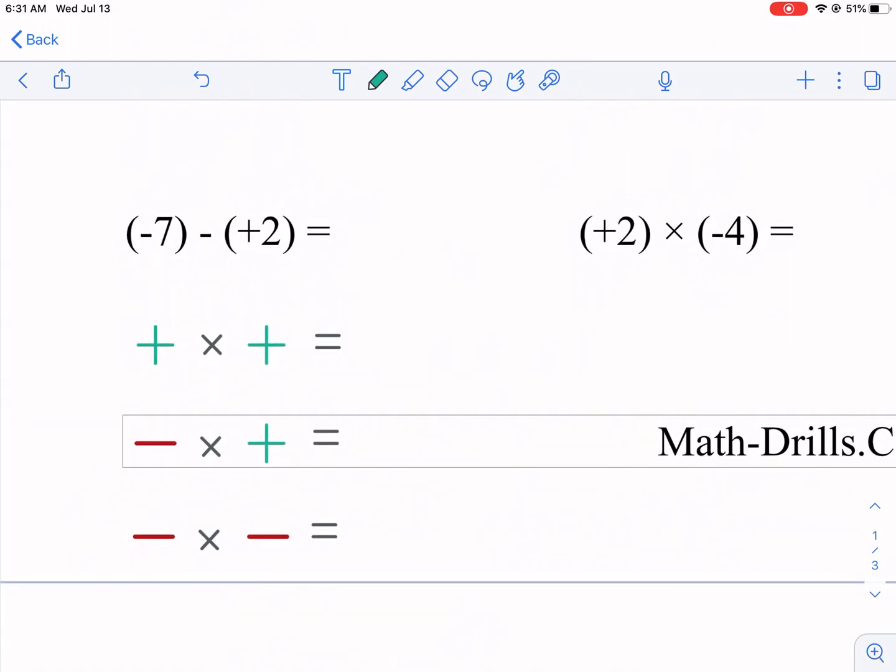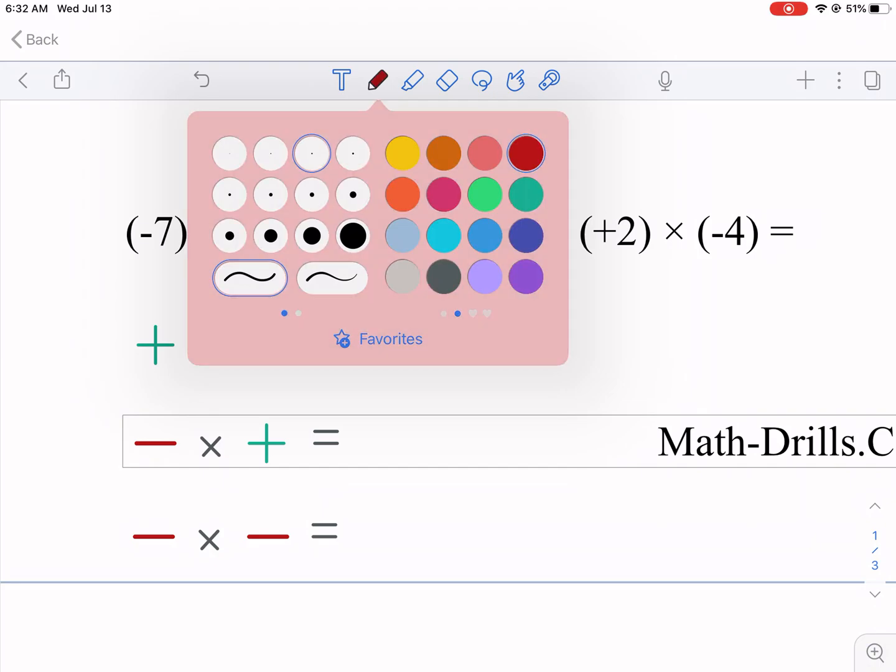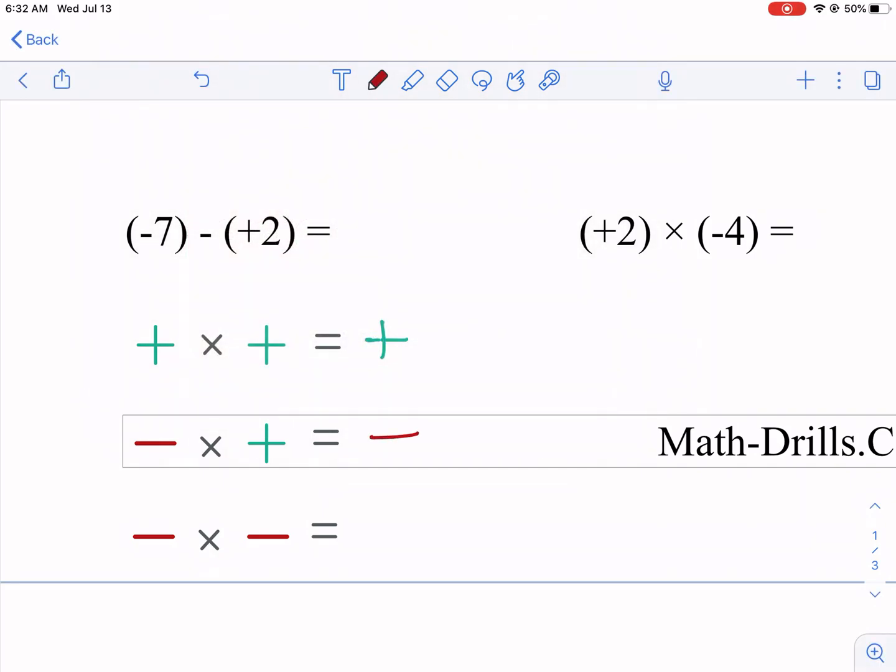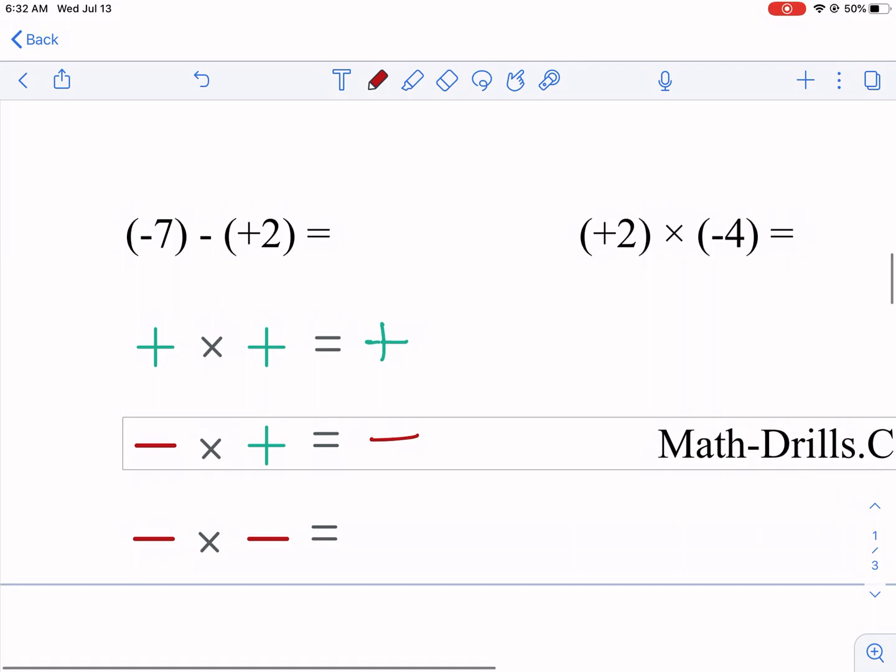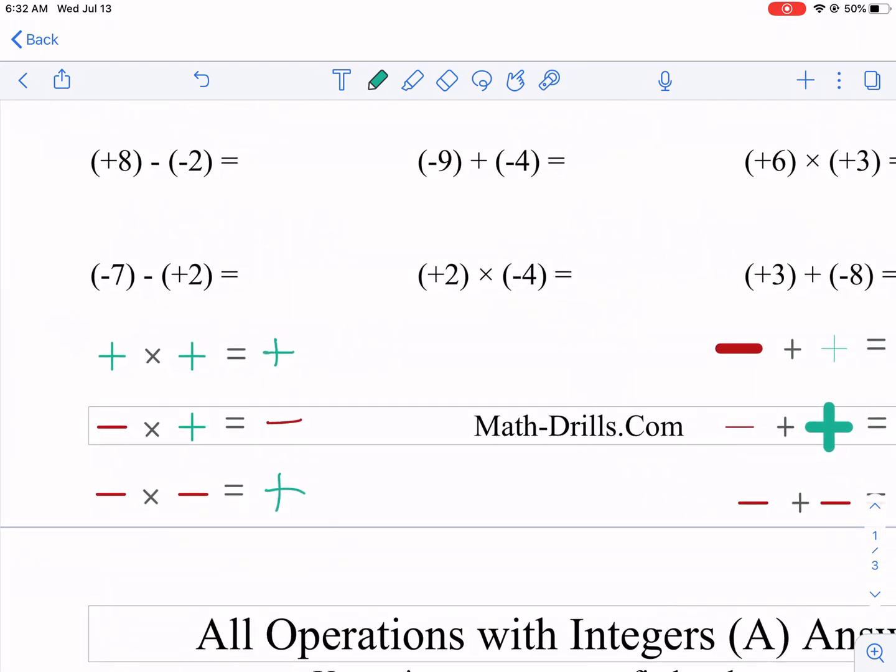So we have positive times positive. What does that equal? It's going to equal a positive. If you have a negative times a positive, it's going to be a negative. And this works also if you have a positive times a negative, it doesn't matter the order. And then if you have a negative times negative, that also is a positive. So that's just something to keep in mind as you're doing this, you're going to want to identify the signs of the numbers, and then that's going to be very important for the multiplication if it's going to be positive or negative.